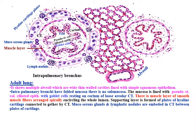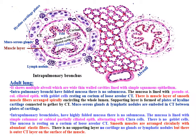Mucoserous glands and lymphatic nodules are embedded in the connective tissue between the plates of cartilage. Intrapulmonary bronchioles, on the other hand, have highly folded mucosa with no submucosa. The mucosa is lined with simple columnar or cuboidal partially ciliated epithelium alternating with Clara cells, and no goblet cells. The corium is loose areolar connective tissue. The muscle layer is formed of smooth muscle fibers arranged circularly with abundant elastic fibers. There is no supporting layer, no cartilage, no glands, or lymphatic nodules, but there is an outer connective tissue layer on the surface of the muscles.